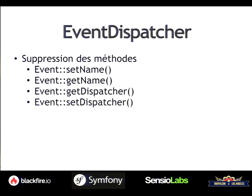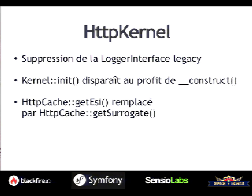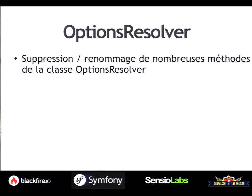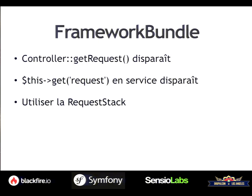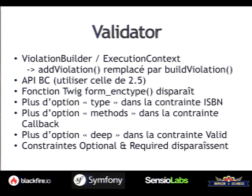For the event dispatcher, we removed some methods mainly because they weren't very useful and made the dispatcher slower. We removed the logger interface from HTTP Kernel because back then the PSR for logging didn't exist — now it does, so we can use that instead. For the serializer, we removed methods that didn't really make sense; they weren't in the interfaces anyway, so now we have exceptions everywhere instead of falling back to weird PHP error mechanisms.